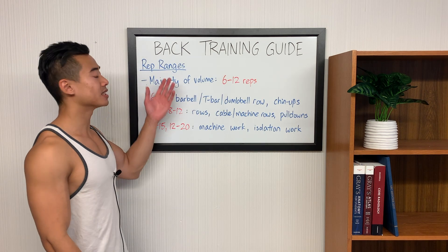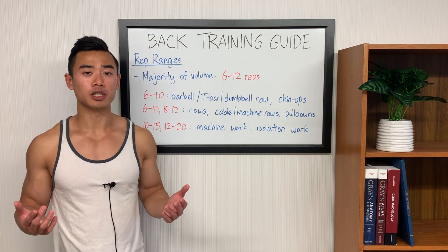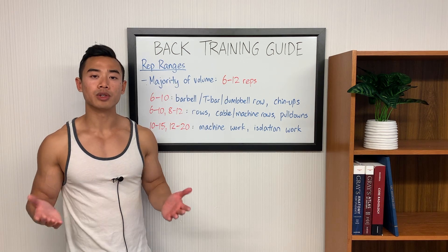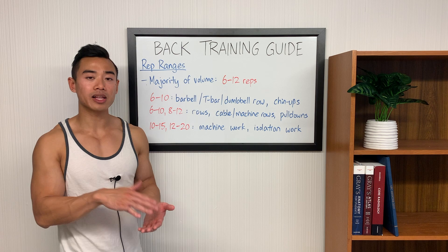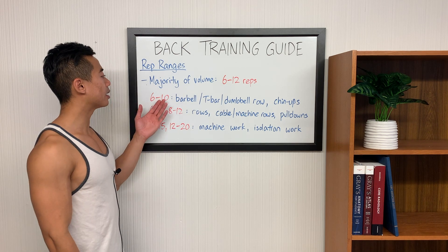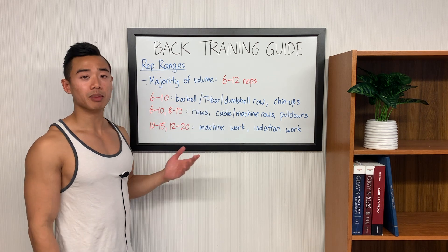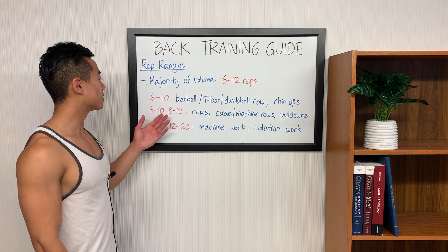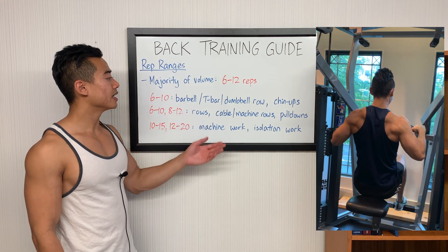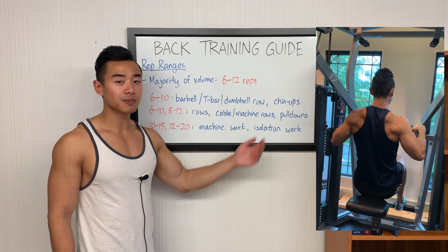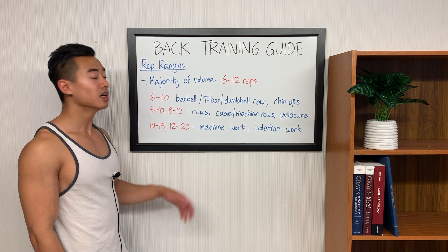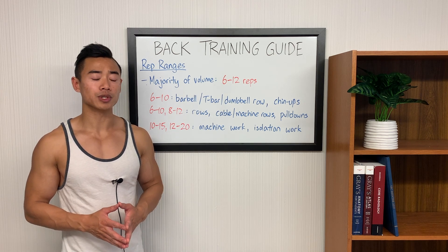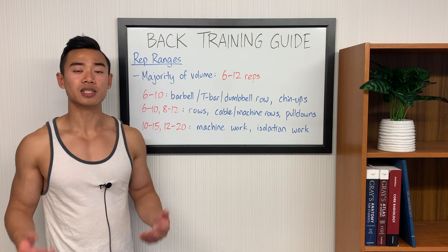Let's touch on rep ranges for the lats and teres major. The lats are pretty intermediate in terms of their fiber type, so I'd recommend using a balanced rep scheme, aiming for the majority of your work to fall in the 6–12 rep range, though you'll want to include a broad range overall. In my programs, I like to use the 6–10 rep range for your main heavy free weight compound movement — typically a barbell or dumbbell row or weighted chin-ups or pull-ups. After that, I'll use the 6–10 and 8–12 rep range for other rows, cable and machine rows, and lat pulldowns. Lastly, I'll use higher rep ranges like 10–15 and 12–20 for machine-type work and isolation work. Rep ranges are very individual and will vary depending on the exercise, so you'll have to experiment to find the optimal rep ranges for each exercise.